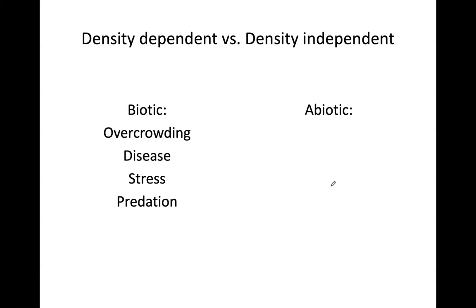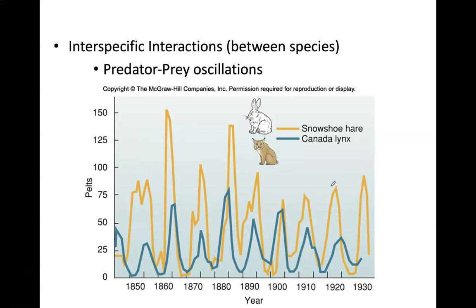Density independent factors are abiotic — the non-living factors that can affect your carrying capacity and population. Things like fire, drought, and other environmental conditions affect an organism's ability to grow as a population and the maximum carrying capacity for an area. Now let's look specifically at one density dependent interaction, which is an inter-specific interaction between species: predation. We're looking at data from snowshoe hares and Canadian lynxes.